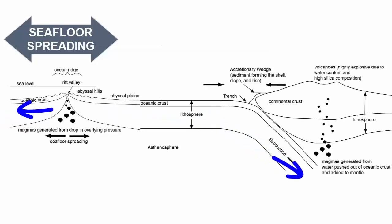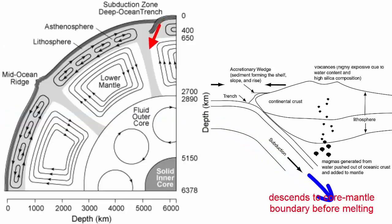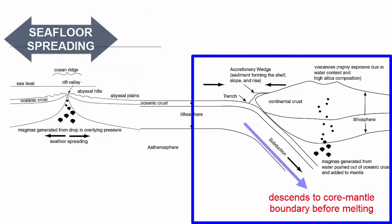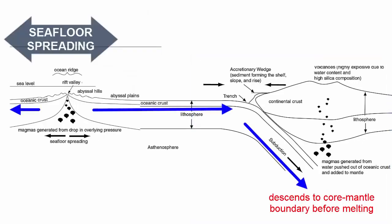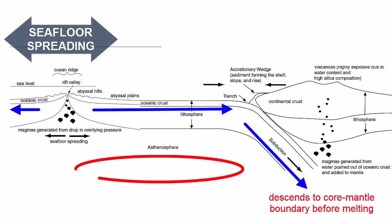Until eventually it's so dense that it becomes denser than the rock underneath it. It detaches and sinks back into the mantle, possibly subducting as deep as the core-mantle boundary before finally melting and becoming reabsorbed back into the mantle. Dense, cold lithosphere sinks down, pulling the distant seafloor spreading center further apart, driving a recycling engine for mantle material.